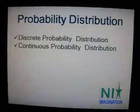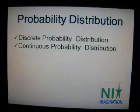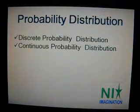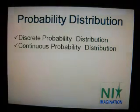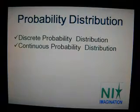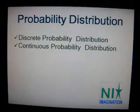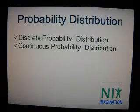Probability distribution can be discrete probability distribution, which can take only a limited number of values that can be listed. And there is continuous probability distribution, under which the variable under consideration is allowed to take on any value within a given range.